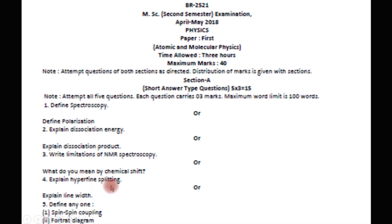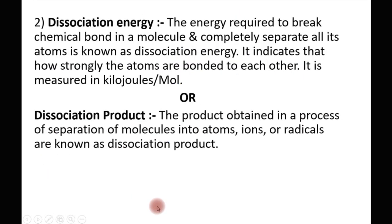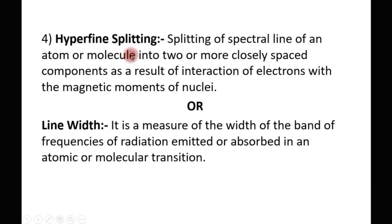The next question is: explain hyperfine splitting. This is a very important question in atomic and molecular physics. Hyperfine splitting is the phenomenon of splitting of the spectral lines of an atom or molecule. Every atom and molecule has associated spectral lines, and whenever these spectral lines get split, this phenomenon is known as hyperfine splitting. Particularly, hyperfine splitting arises when there is an interaction of electrons with the magnetic moments of the nucleus — causing spectral lines to split, giving the hyperfine structure.